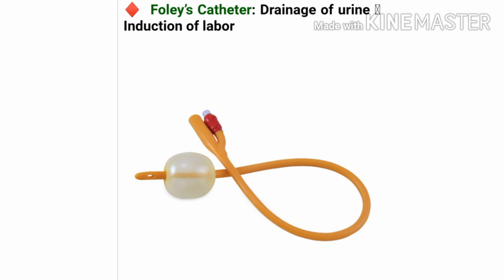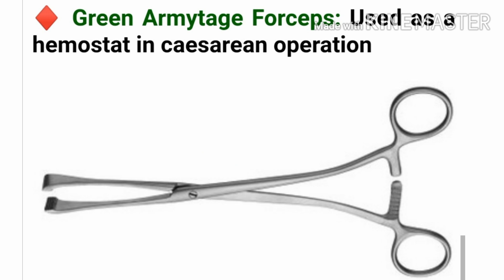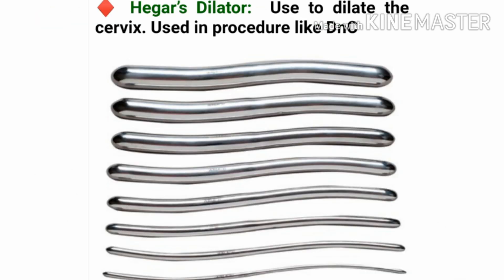We are very familiar with this figure — it is Foley's catheter. It is used for drainage of urine during the induction of labor. This is the figure of Green-Armitage forceps, used as a hemostat in cesarean operations.